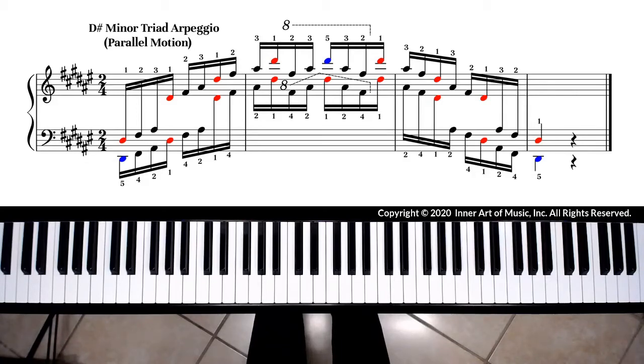After you are comfortable playing the D-sharp minor arpeggio hands separately, you may practice hands together. Practice one or two octaves at a time.